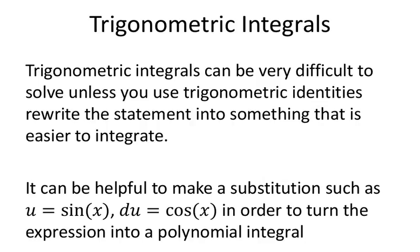It can be helpful to make substitutions, such as u equals sine of x and du equals cosine, or maybe even a secant and its derivative secant times tangent. Those kinds of trigonometric substitutions can simplify things into a polynomial. Same with cosine squared plus sine squared equals 1.